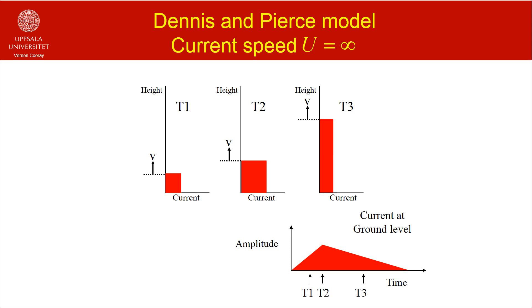If we make the current speed infinite in the Dennis and Pierce model, the current fed at the channel base will appear instantaneously at any given point on the return stroke channel below the return stroke front. That is, at any given instant the current will be the same below the return stroke front. You can see immediately that this is nothing but the Bruce and Gold model.